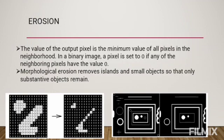Erosion. The value of the output pixel is the minimum value of all pixels in the neighborhood. In a binary image, a pixel is set to 0 if any of the neighbor pixels have the value 0. Morphological erosion removes islands and small objects so that only substantive objects remain.